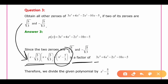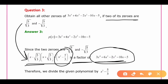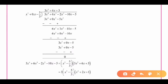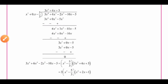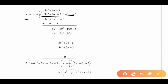So x² - 5/3 is a factor of p(x), which is 3x⁴ + 6x³ - 2x² - 10x - 5. To find the remaining two zeros, we will perform the division operation — dividing p(x) by g(x), where g(x) = x² - 5/3.